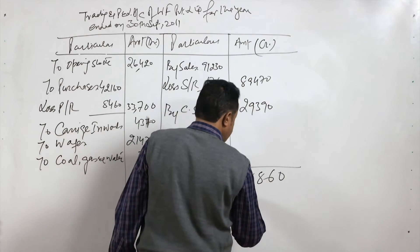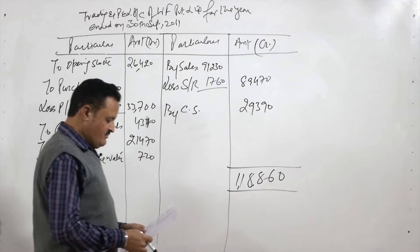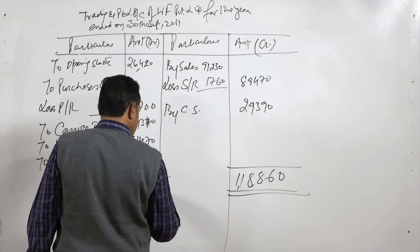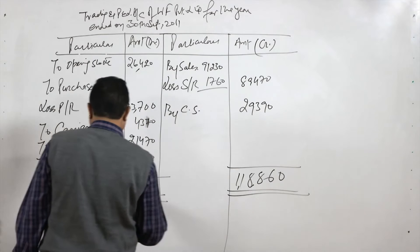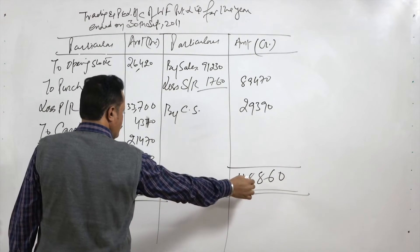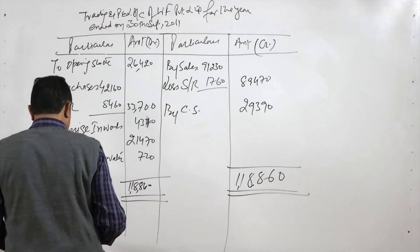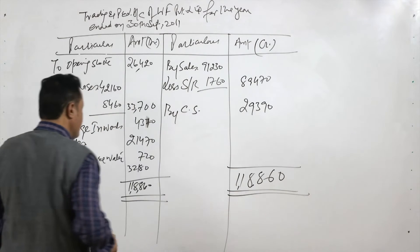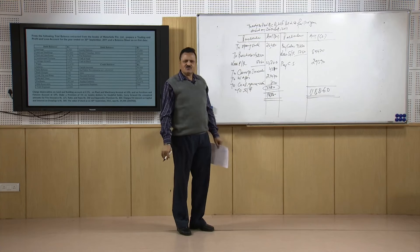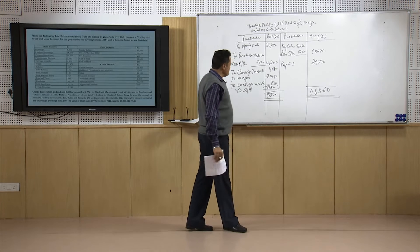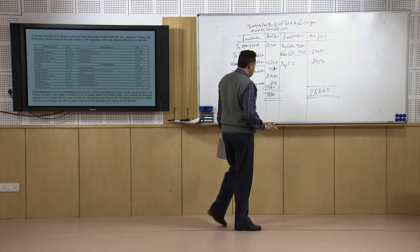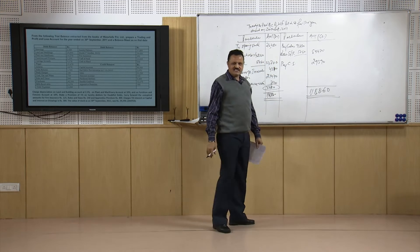The total of the debit side works out to 1,18,860 rupees. The difference between this total and the credit side items gives us the gross profit — the broader, not final, measure of profit. The gross profit works out to 32,180 rupees. This completes the trading account portion and we now continue to the profit and loss account section.